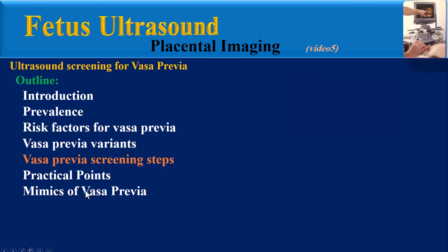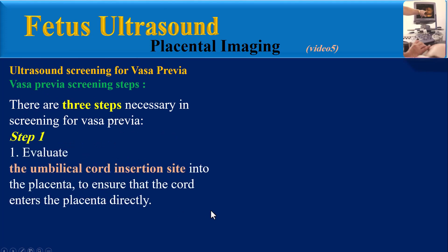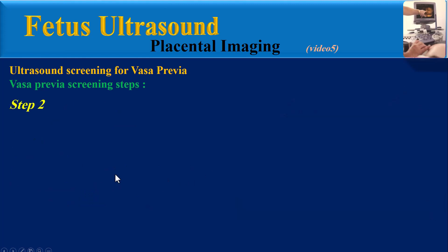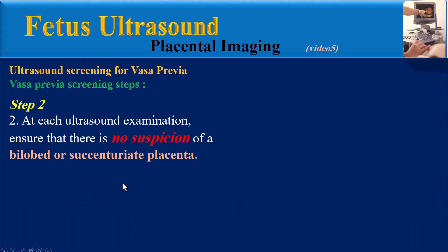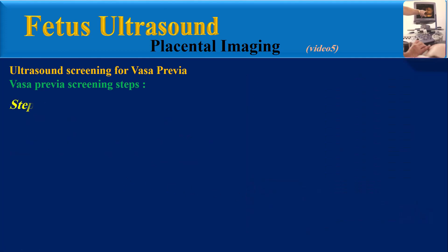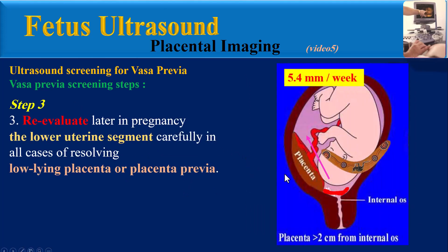Vasa Previa screening steps: there are three steps necessary in screening for Vasa Previa. Step 1: evaluate the umbilical cord insertion site into the placenta to ensure that the cord enters the placenta directly. Step 2: at each ultrasound examination, ensure that there is no suspicion of a bilobed or succenturiate placenta. Step 3: reevaluate later in pregnancy the lower uterine segment carefully in all cases of resolving low-lying placenta or placenta Previa.